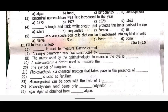Fill in the blanks. Sixteenth one, dash is used to measure electric current. Seventeenth one, a symbol — the parameter was first constructed by dash. A mirror used by the ophthalmologist is dash. The calorimeter is a device used to measure the dash. The symbol of tungsten is dash.